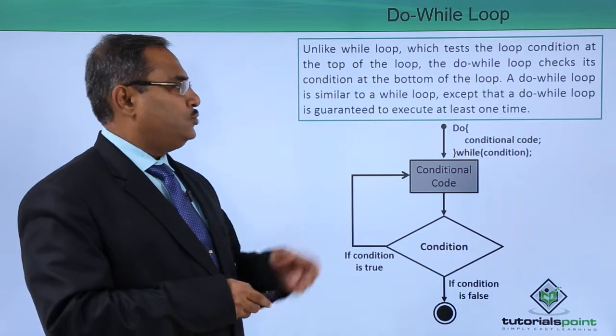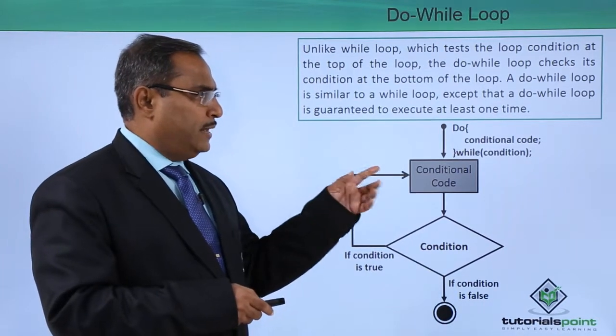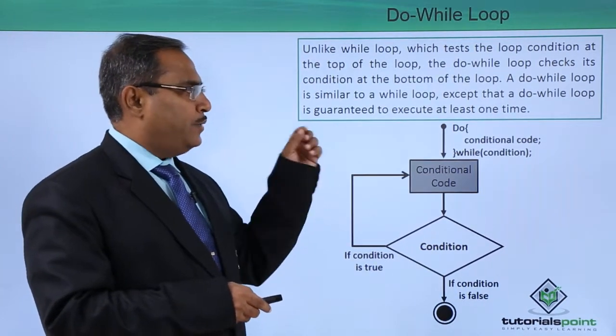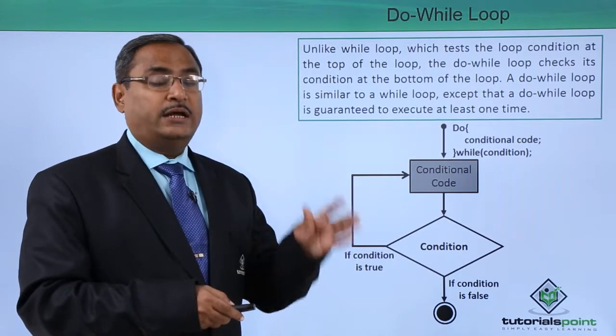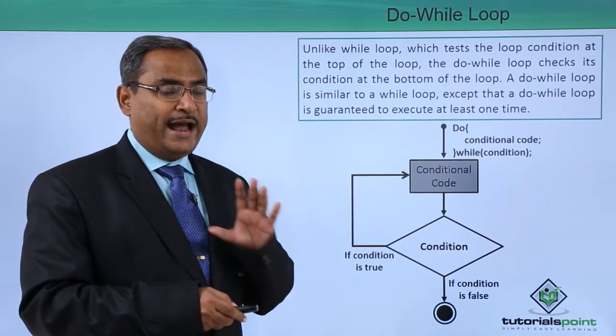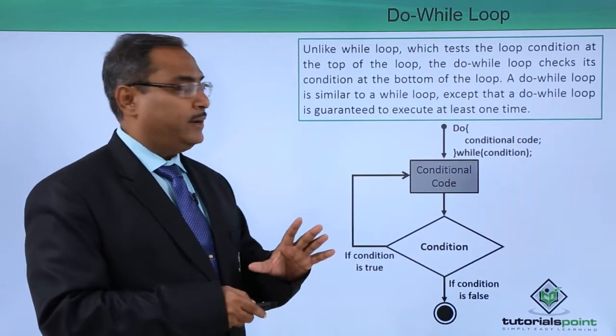A do-while loop is similar to a while loop except that a do-while loop is guaranteed to execute the conditional body at least once. The conditional code will be executed at least once - that is the guarantee we are having.